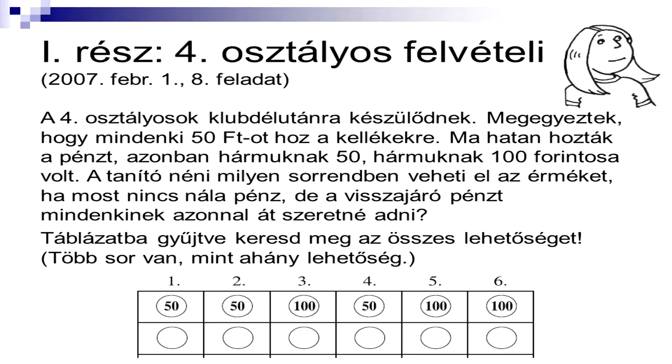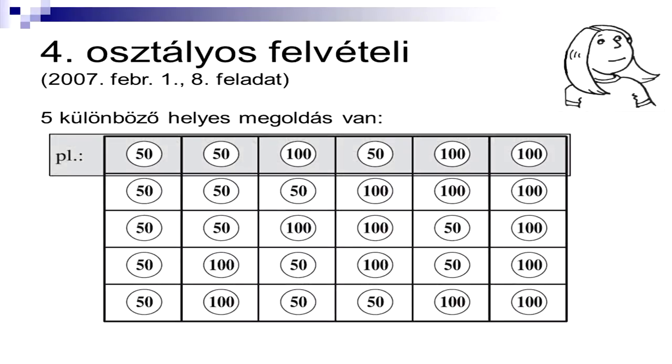Ezt kapták meg a negyedikesek. Ott volt egy ennél hosszabb táblázat a lap alján, és egy próbálkozással keressék meg az összes lehetőséget. Egyet megadtak előre. És ahogy a felvételin lenni szokott, mindig több sor volt, mint ahány lehetőség, tehát egy felső becslésük volt. Erre öt helyes megoldás van. Esetszétválasztással meg lehet találni mindegyiket. Nem olyan bonyolult, azért egy negyedikesnek szerintem nehéz.